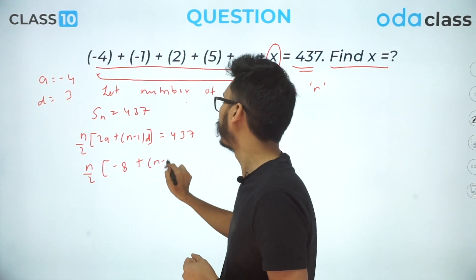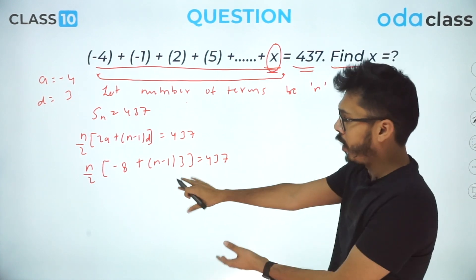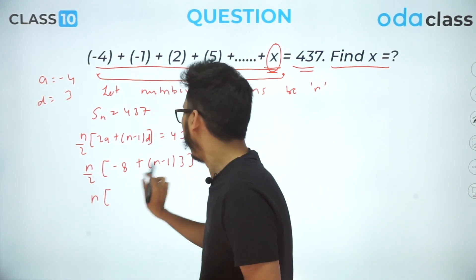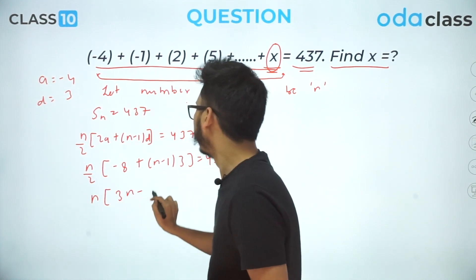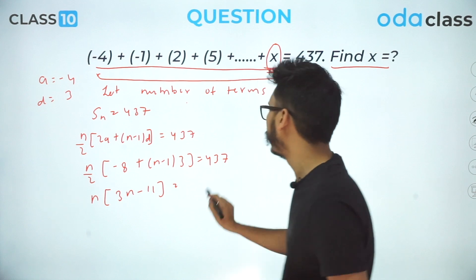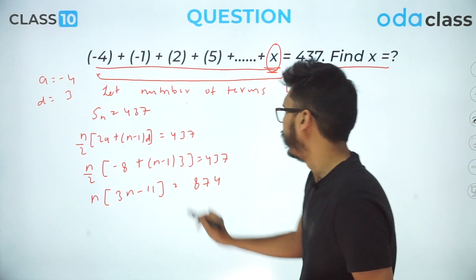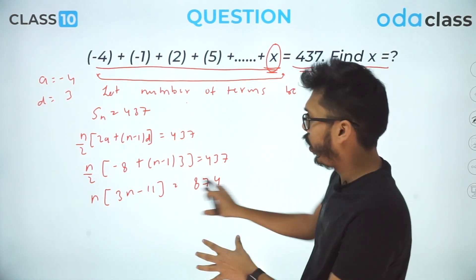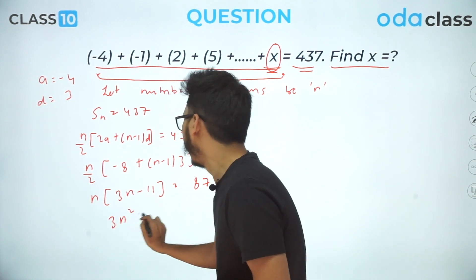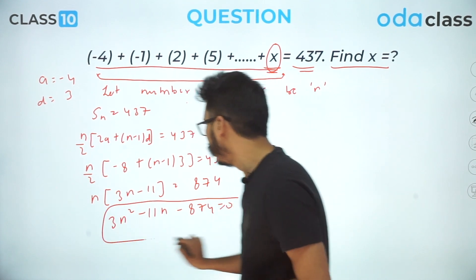Expanding this gives a quadratic equation. Multiplying through: n(3n − 11) / 2 = 437, which becomes 3n² − 11n = 874, and rearranging gives 3n² − 11n − 874 = 0.